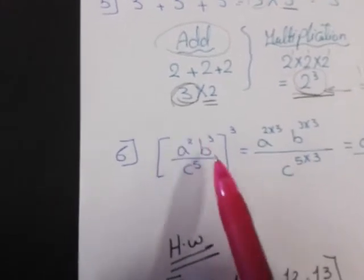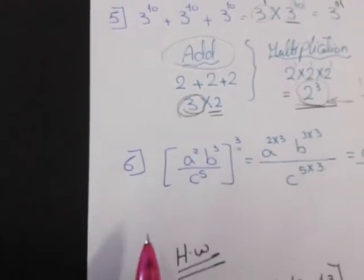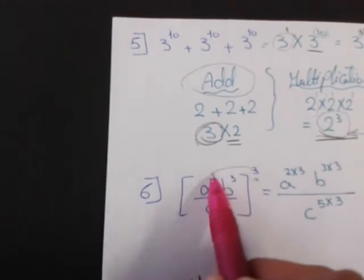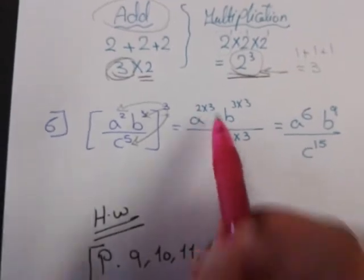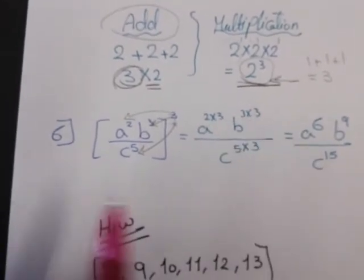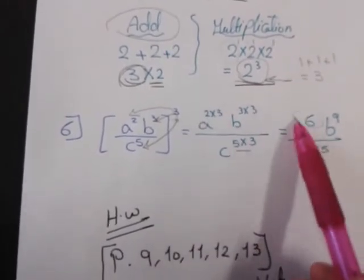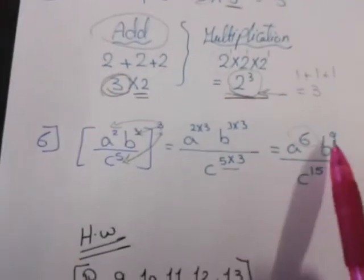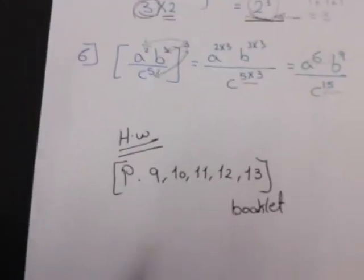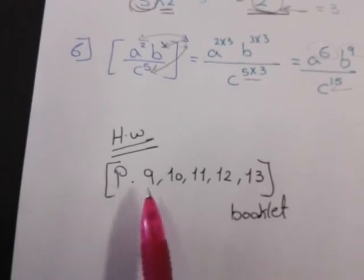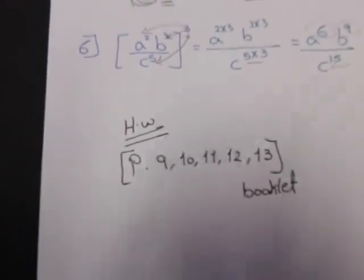Example 6 and last one: a power 2 times B power 3 over C power 5, this fraction all to the power 3. I distribute 3 to a power 2, B power 3, and C power 5. a power 2 times 3 gives me a power 6, B power 3 times 3 gives me B power 9, and C power 5 times 3 gives me C power 15. Your homework today is pages 9, 10, 11, 12, and 13 in your booklet of algebra.